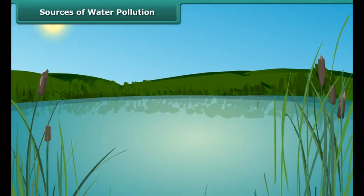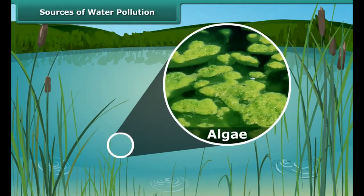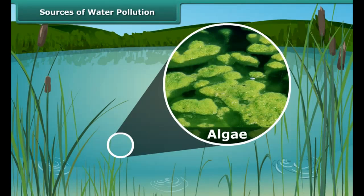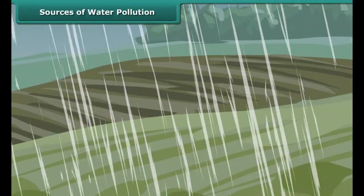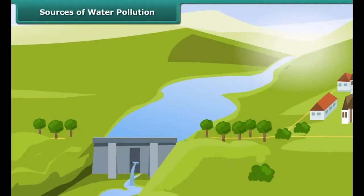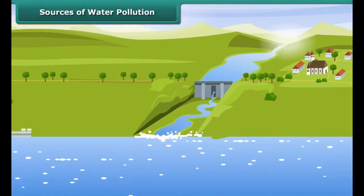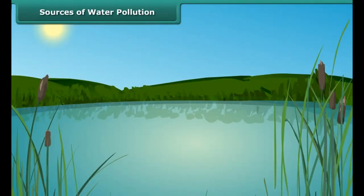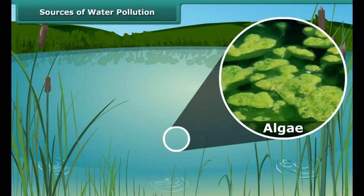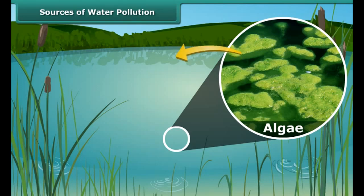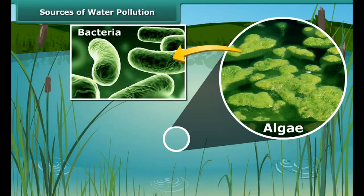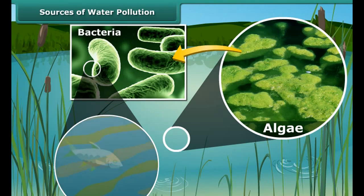Have you seen ponds which look green from a distance? This is due to algae growing in them. During rainfall, large amounts of fertilizers get washed from the fields and fall into ponds and rivers. These washed-off fertilizers act as nutrients for algae to flourish. When these algae die, they serve as food for decomposers like bacteria. Bacteria use up most of the oxygen in the water, and as a result, fish and other aquatic animals die due to lack of oxygen.